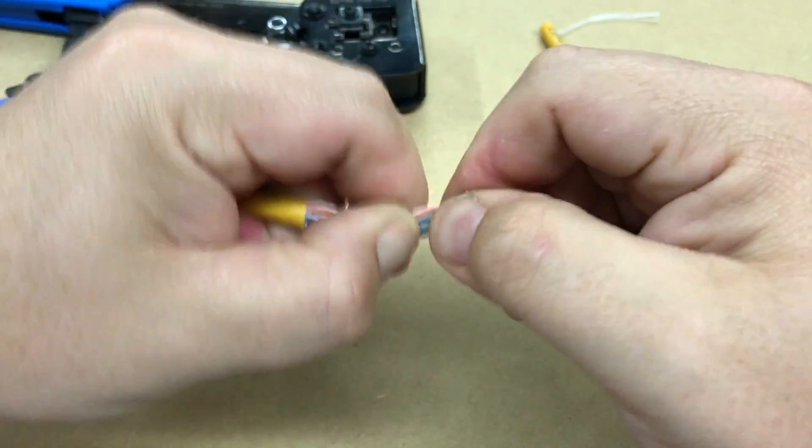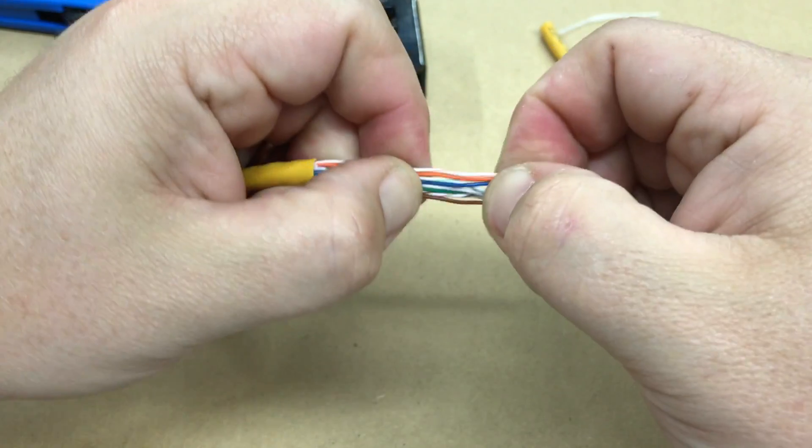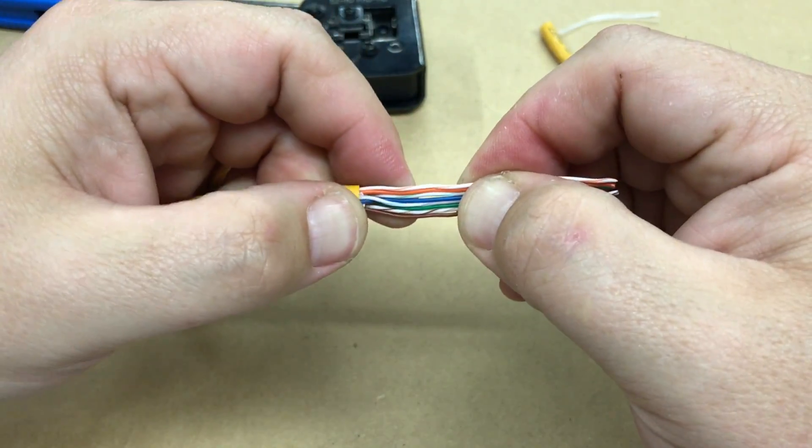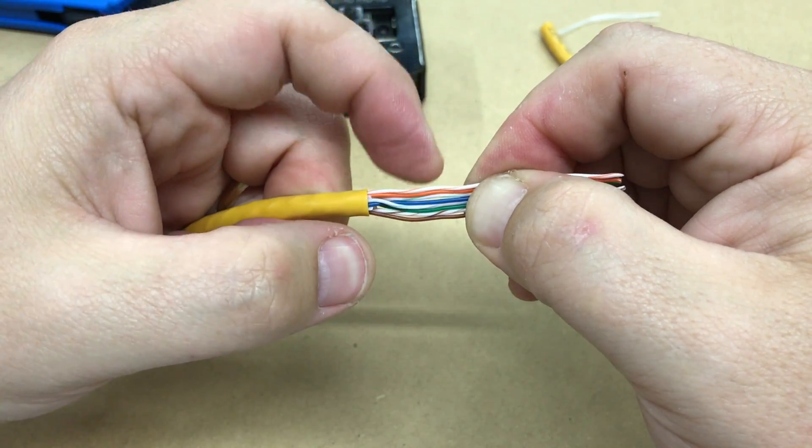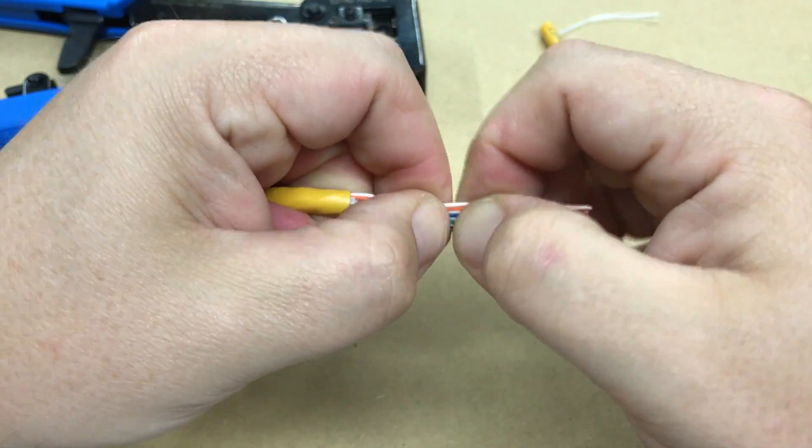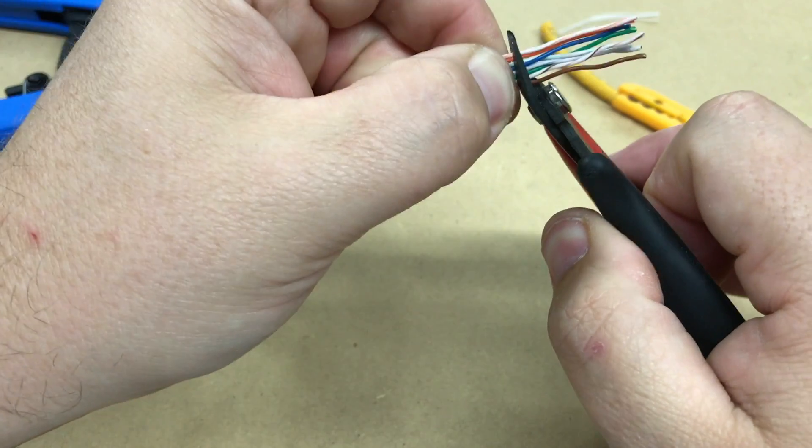What I'll try to do is get this set up. I kind of wiggle it back and forth a little bit, just make sure my pairs are all lined up the way I want: white orange, orange, white green, blue, white blue, green, brown, white brown. And I just cut off some of the excess here.